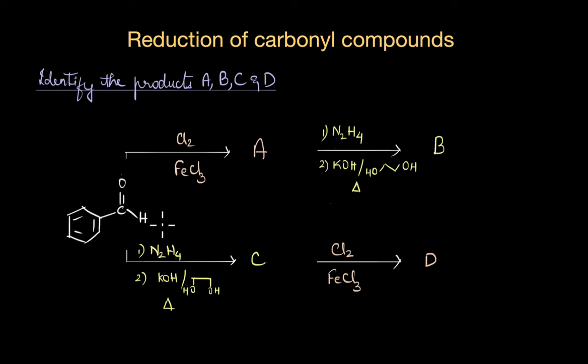We know that the CHO group attached to the benzene ring is actually an electron withdrawing group. Because of this electron withdrawing nature, the CHO group deactivates the benzene ring and directs the incoming electrophile which is Cl+ to the meta position. Therefore the structure of A would be something like this where we have chlorine at meta position relative to the CHO group.